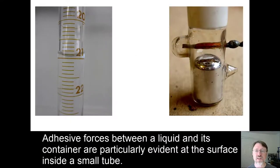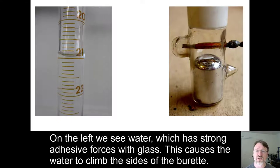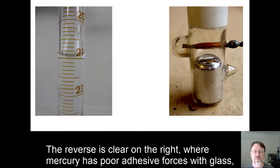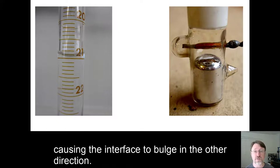Adhesive forces between liquid and its container are particularly evident at the surface inside a small tube. On the left, we see water which has strong adhesive forces with glass. This causes the water to climb the sides of the burette. The reverse is clear on the right, where mercury has poor adhesive forces with glass, causing the interface to bulge in the other direction.